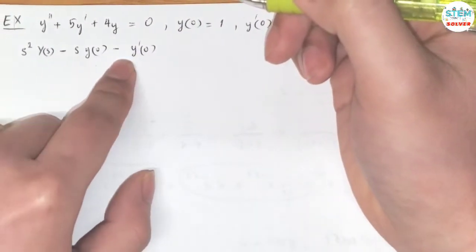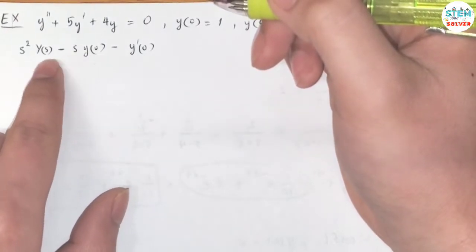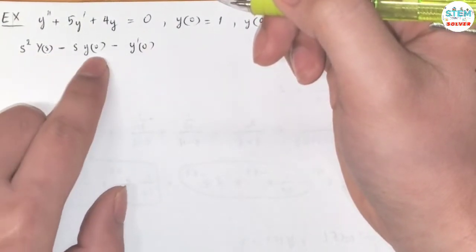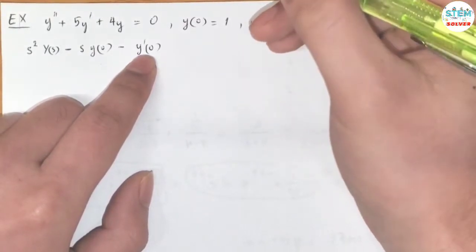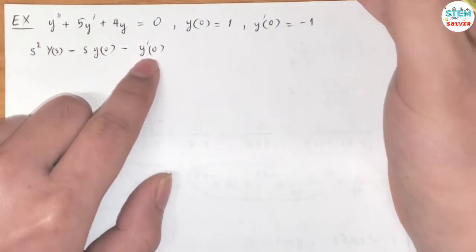Subtract down until you reach s⁰, and so you have capital Y(s), y(0), and then y'(0). The next term would be y''(0) if you have a triple derivative.